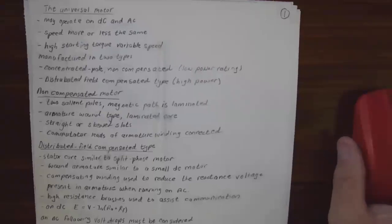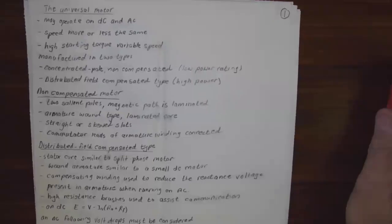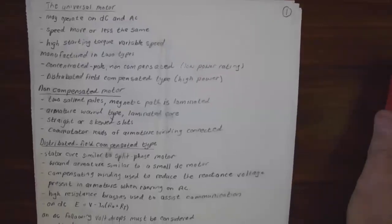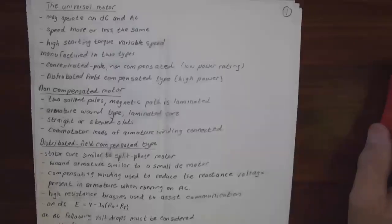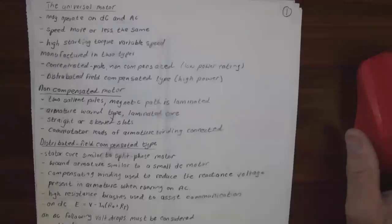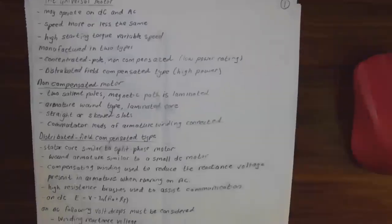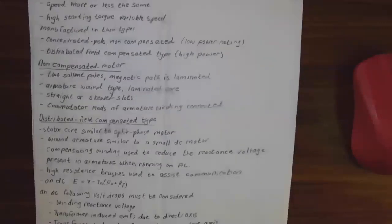This is basically a summary of what was in the book. You can see the universal motor may operate on DC and AC, the speed is more or less the same on AC and DC, high starting torque, variable speed. Manufactured in two types: the concentrated pole non-compensated and the distributed field compensated winding.